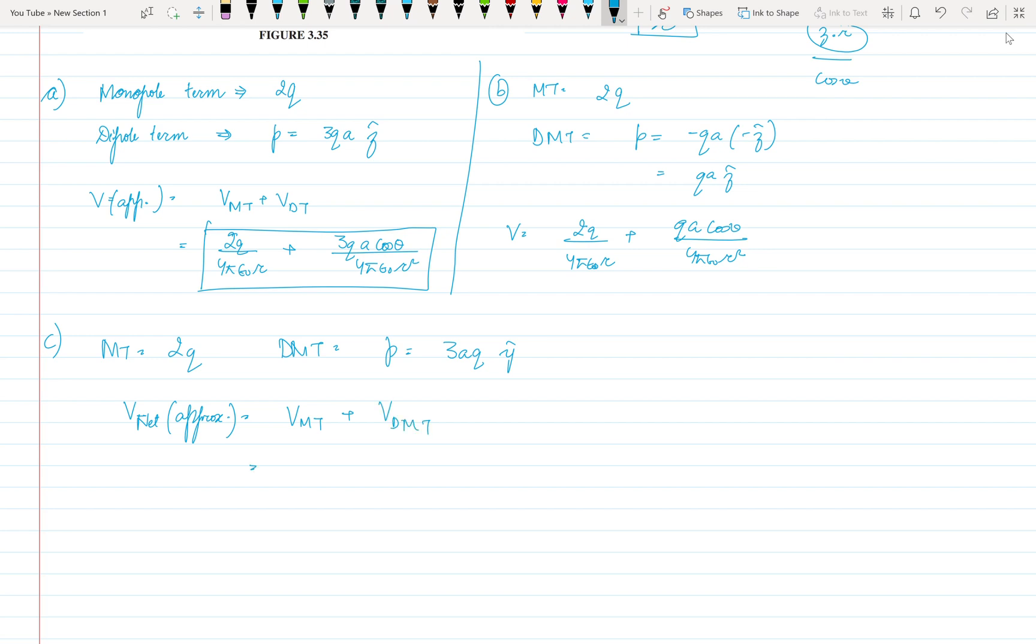And it will be 2Q upon 4 pi epsilon naught R plus. But now the dipole moment term is in the Y cap direction. So we need to apply the standard formula or the general formula here which is P dot R cap upon 4 pi epsilon naught R square.